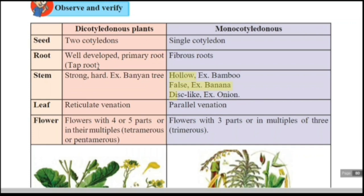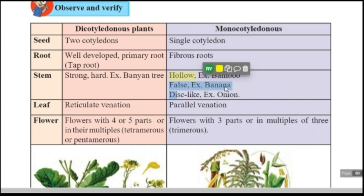For stems: in monocots, hollow stems are present — for example, bamboo; or false stems, for example, banana; or disc-like stems, for example, onion. The stem of dicotyledons is strong and hard — for example, the banyan tree.